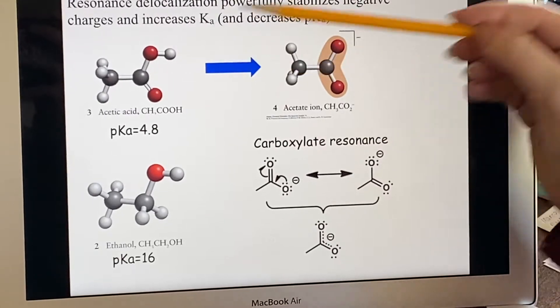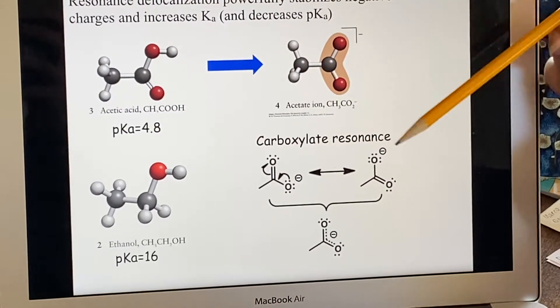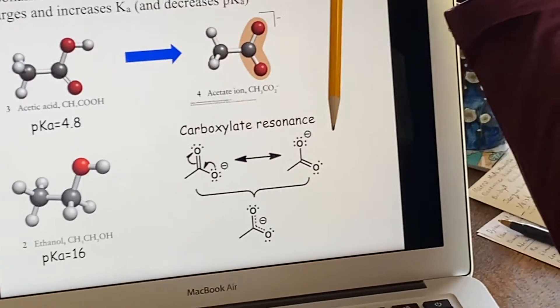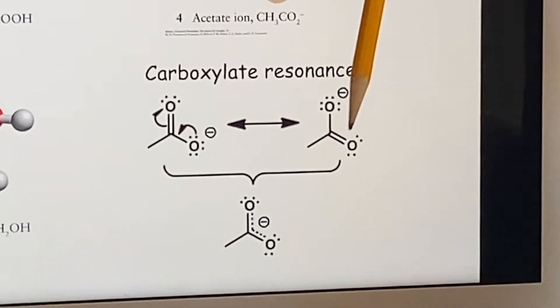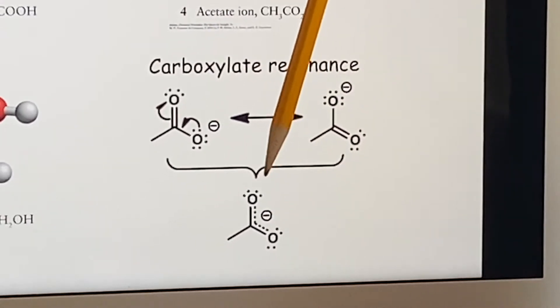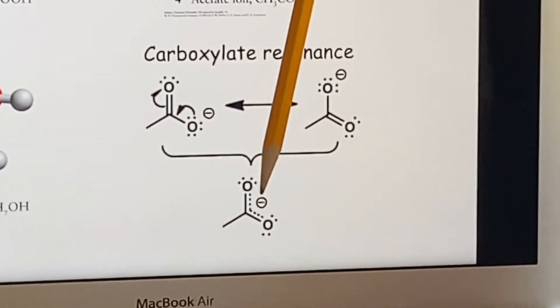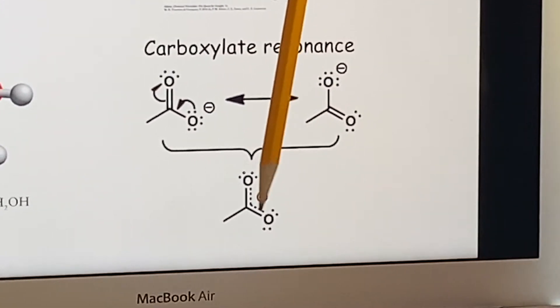But the fact that this is here as being a very electronegative atom means that it's pulling electrons away from this bond and allowing the H+ more likely to escape. And then you end up with that carboxylic resonance we were talking about, that you could draw it as either the double bond here or the double bond there, which effectively means that that double bond is being shared among the two oxygens.